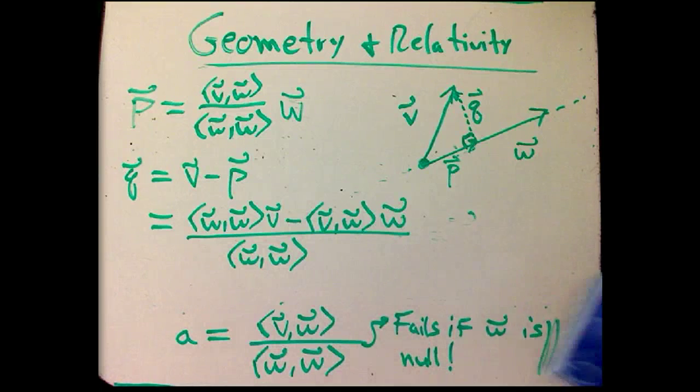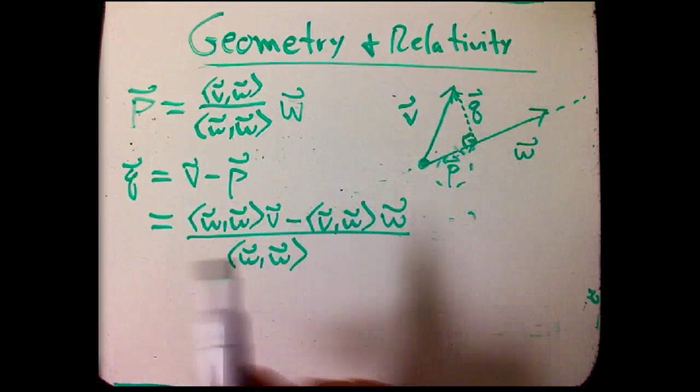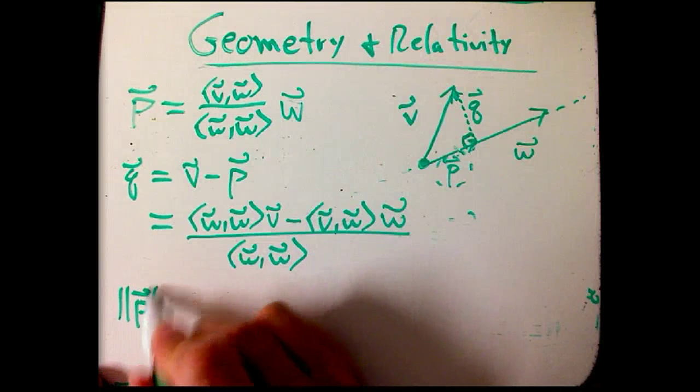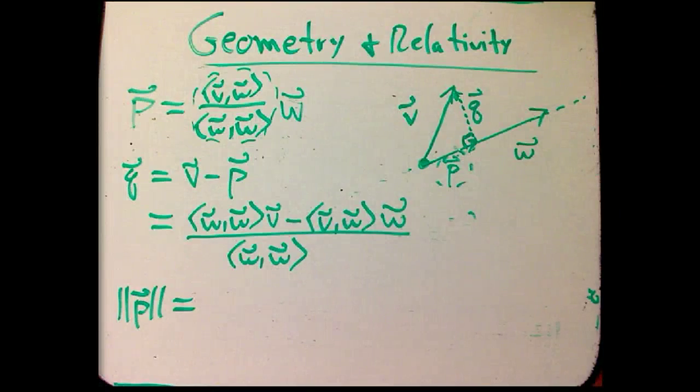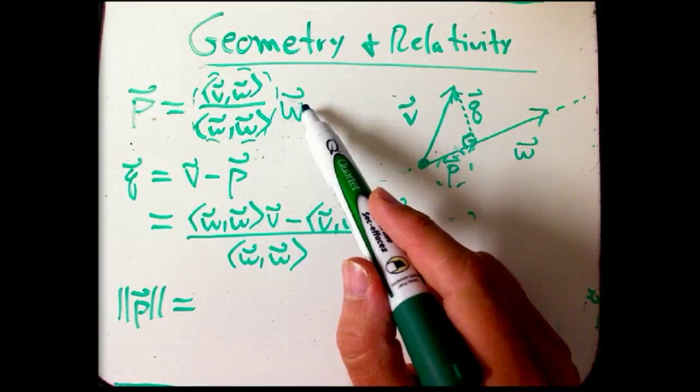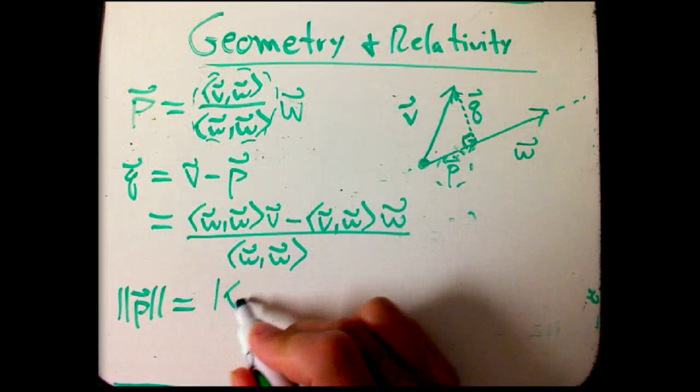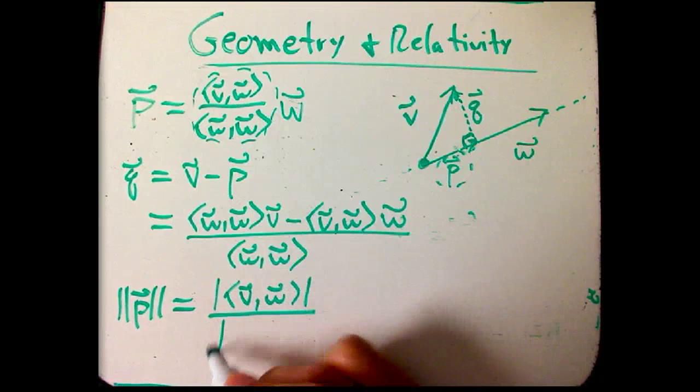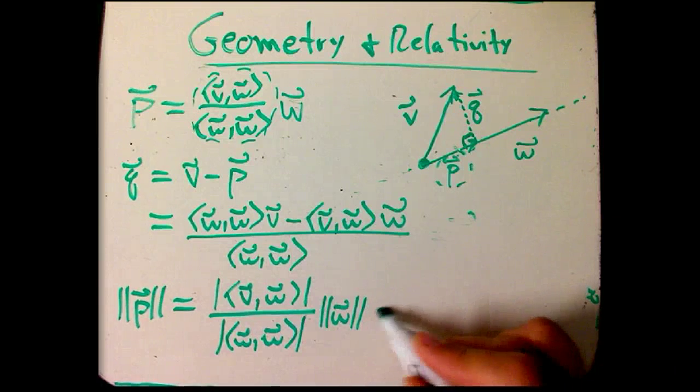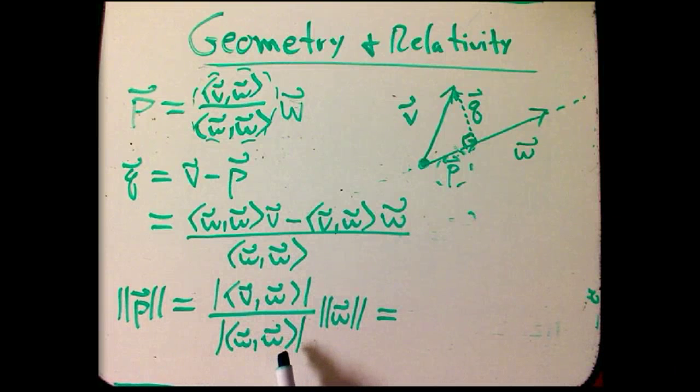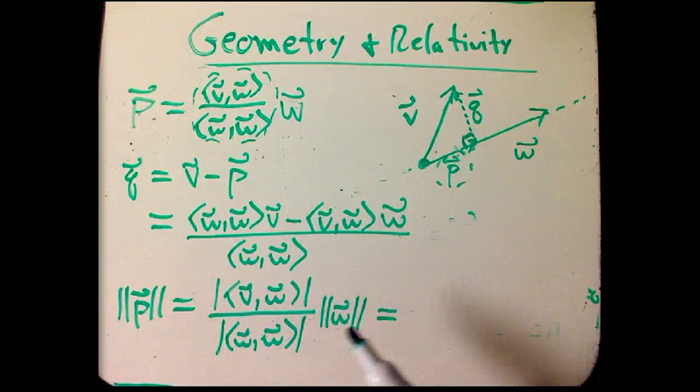And then the last one that we're going to need is sometimes we only care about the magnitude. How much does V go in the direction of P? The magnitude of P, so that's just the magnitude of this guy. Now this is a scalar, and even in the Minkowski case, we have this very basic fact that the magnitude of a scalar times a vector, you just get the absolute value of this number coming out. And so it's going to be the absolute value, actually let me put absolute values top and bottom, and then times the magnitude of W. The scalar product of W with W, remember that can be negative, but we're intentionally just taking the absolute value of it.